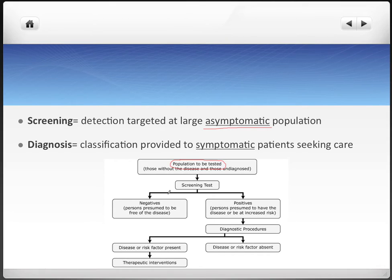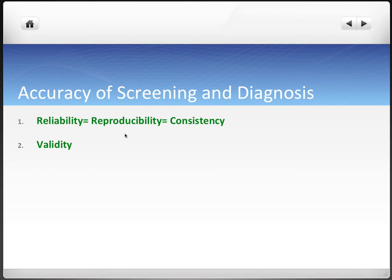Negative screens are fine, and positive screens are referred to a diagnosis, where they are measured for specific disease or risk factors, and the doctor will make the call whether or not they have the disease. There are two main measurements: reliability, also known as reproducibility or consistency, and validity.